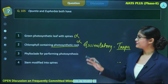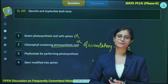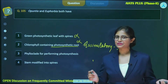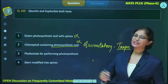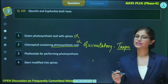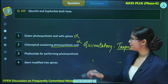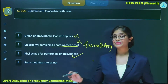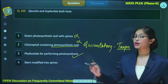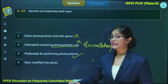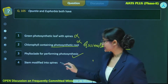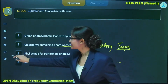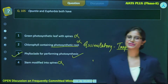Option three: phylloclad for performing photosynthesis. In Apanchia the stem got modified into a flattened structure, and in Euphorbia it modified into a cylindrical structure — which is known as phylloclad. Option four: stem modified into spine — no, this is not the case. The stem gets modified into a leaf-like structure that can perform photosynthesis, so option four is incorrect. The correct answer is option three.